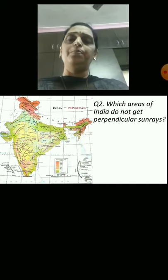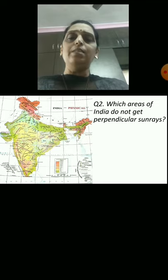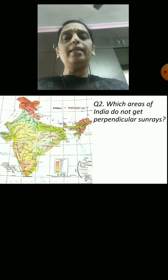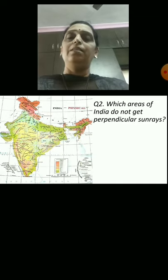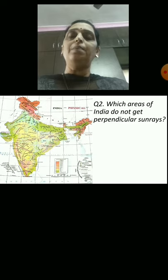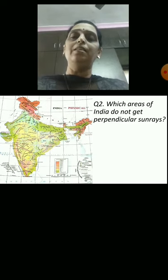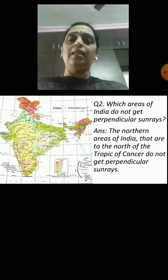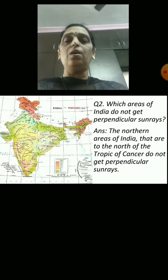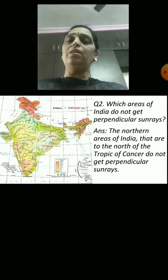Question 2: Which areas of India do not get perpendicular sun rays? The answer is the northern area of India, that is to the north of the Tropic of Cancer, does not get perpendicular rays.